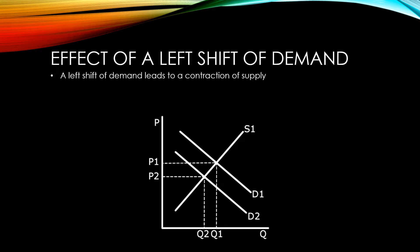The result of a left shift of demand will be a decrease in both equilibrium price and equilibrium quantity. If you imagine the two demand curves labeled the other way around, you can easily see that when we have a right shift of demand, we would have an increase in equilibrium price and equilibrium quantity.